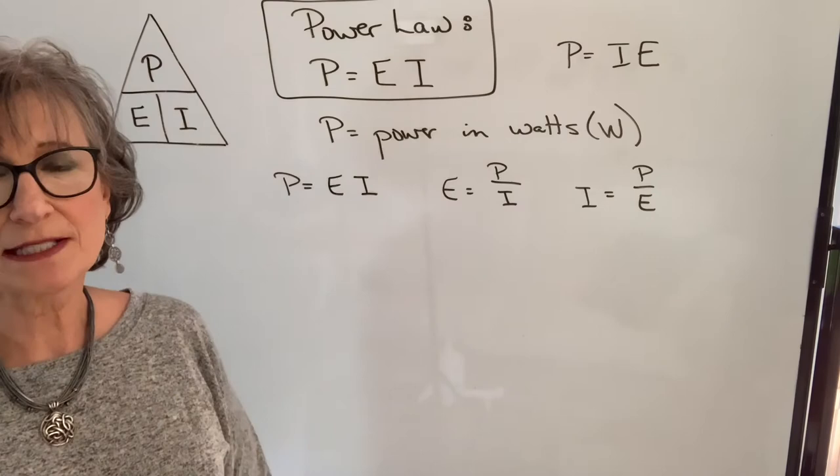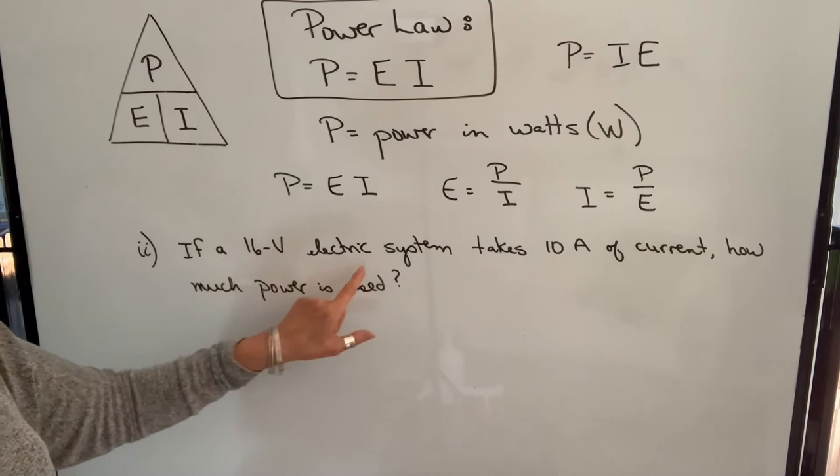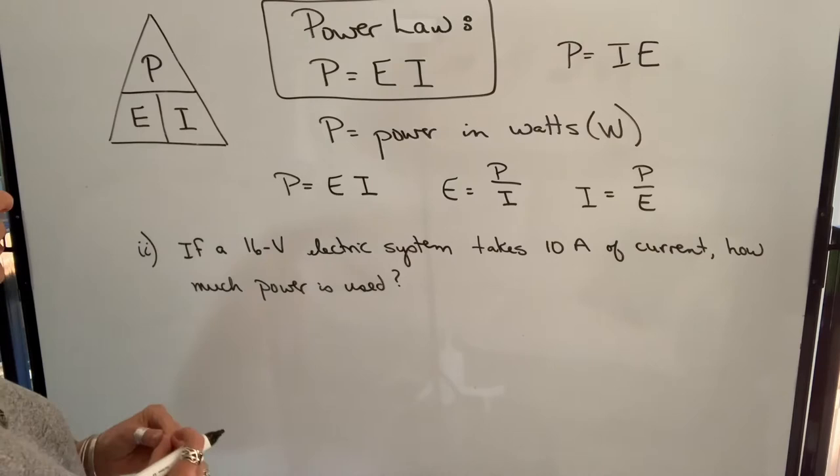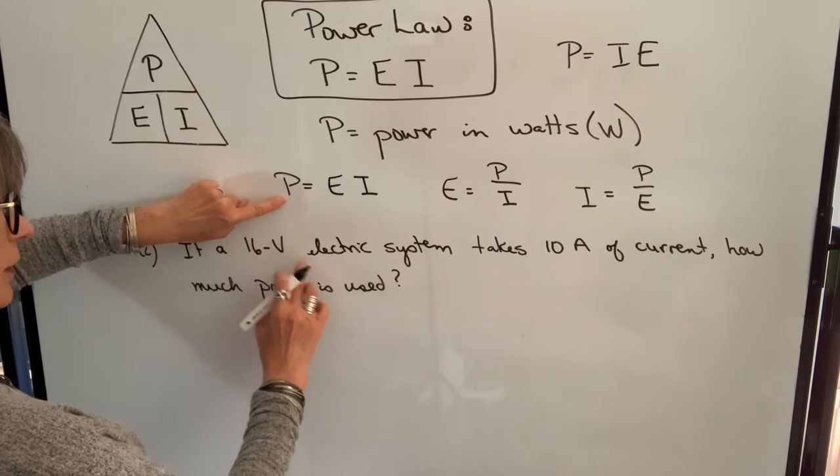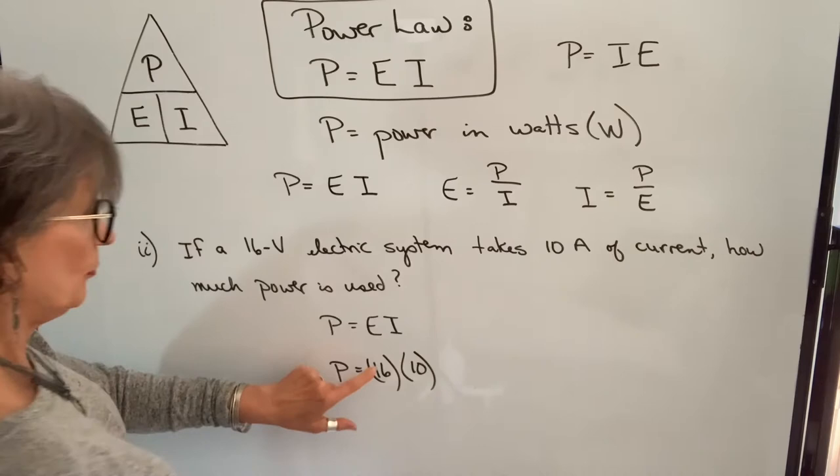Let's take a look at an example. If a 16 volt electric system takes 10 amps of current, how much power is used? So in this case, we want to know power. So we're just going to use this formula. We know voltage and we know current. So P is equal to E times I. Plug in our values for voltage and current. And that gives us our power in watts.